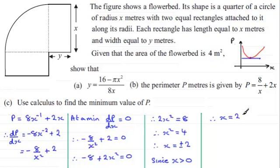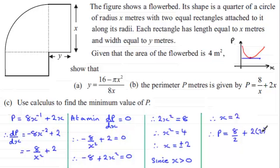Now that we've got x equals 2, we can find out what the perimeter is. So therefore the perimeter p would be 8 divided by 2 plus 2 times 2. In other words, you've got 4 plus another 4, which is going to be 8. So the perimeter is 8 metres.